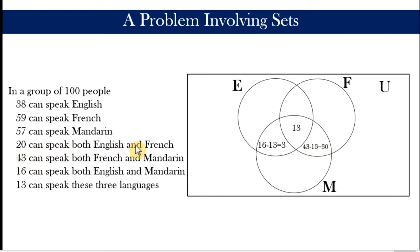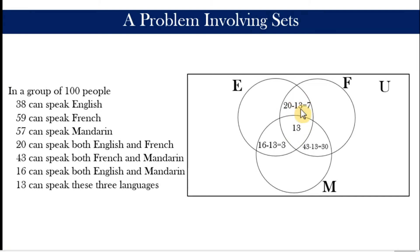In like manner, the statement that 20 can speak both English and French but not Mandarin means there should be 20 people in that space. Since we have already accounted for 13 of them in the center, this area should have 7 people, so that 7 plus 13 equals 20.